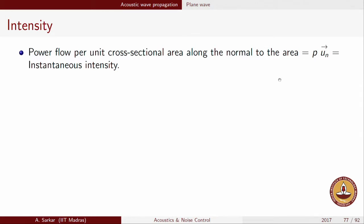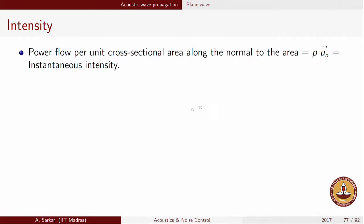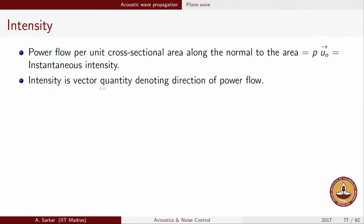Intensity at a point is therefore a vector quantity because it depends upon the direction of the unit normal of the area under consideration. Intensity is a vector quantity denoting the direction of power flow.